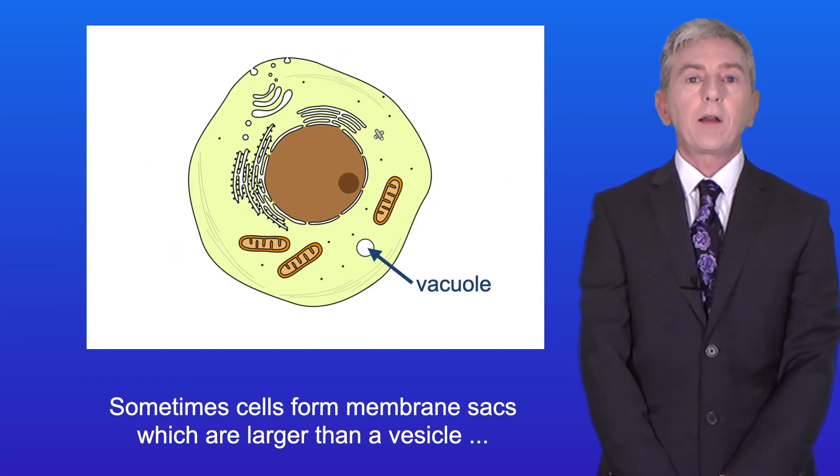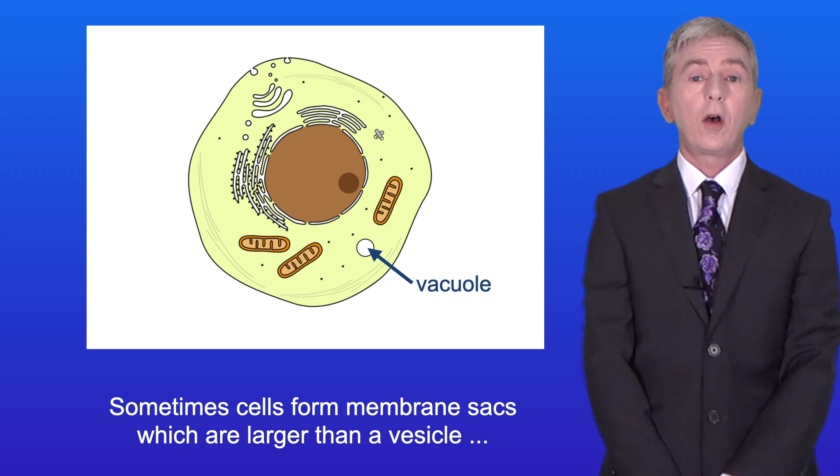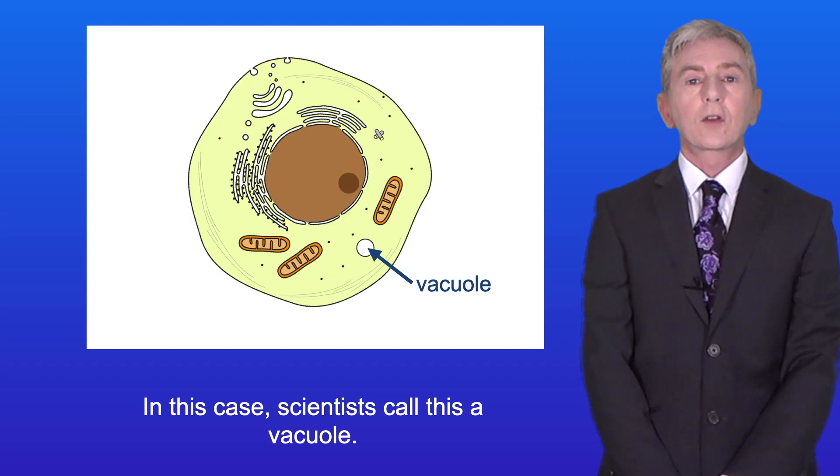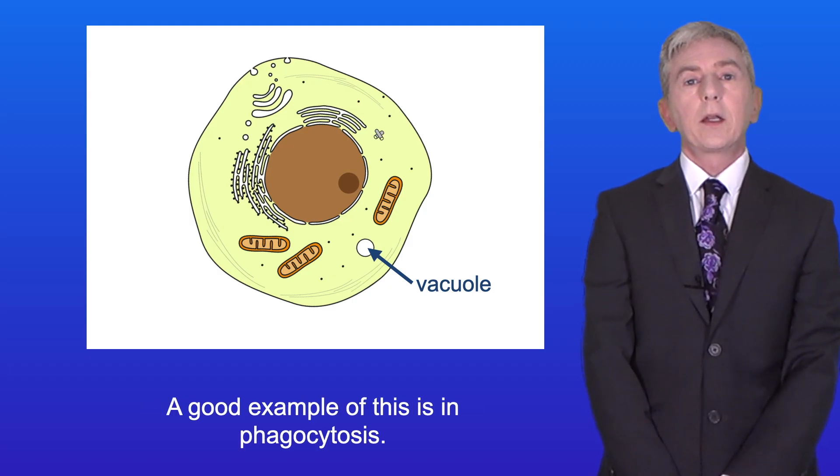Now sometimes cells form membrane sacks which are larger than a vesicle and can be longer lived. In this case scientists call this a vacuole and a good example of this is in phagocytosis.